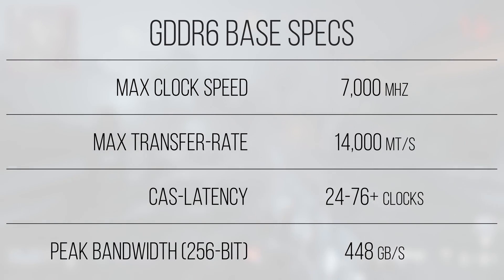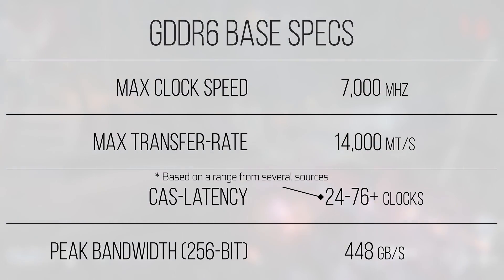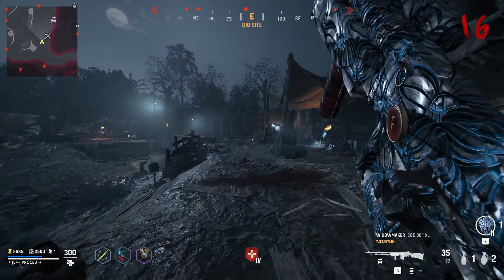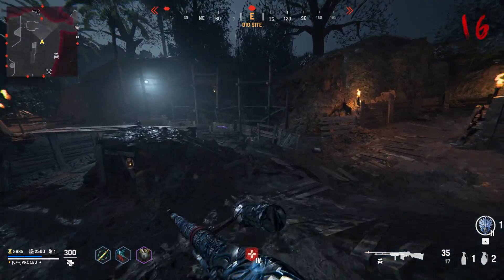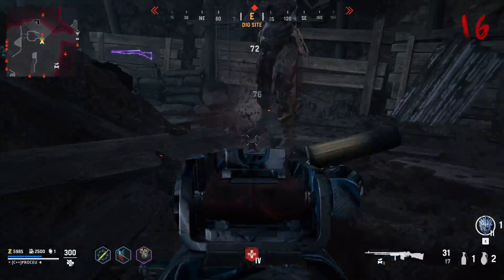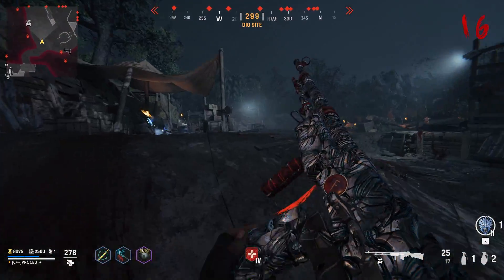Conversely, GDDR6 theoretically clocks to above 12 GHz, enabling over 24 gigabit per second of data transfer per pin. However, the timings are significantly looser. To make up for this, GPUs utilize several memory controllers in parallel to compensate for this high latency with high throughput. CPUs on the other hand only ship with two memory controllers at most on mainstream desktop chips.